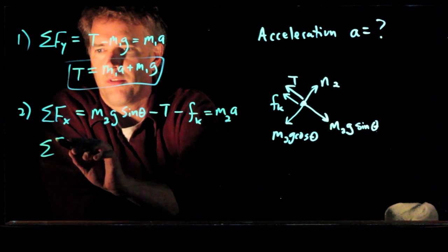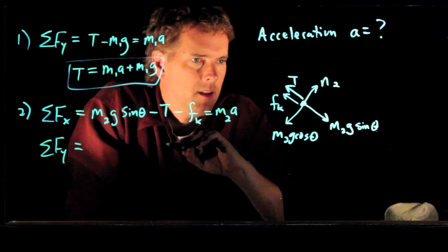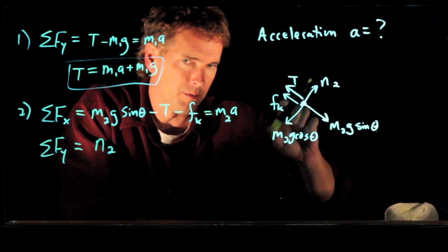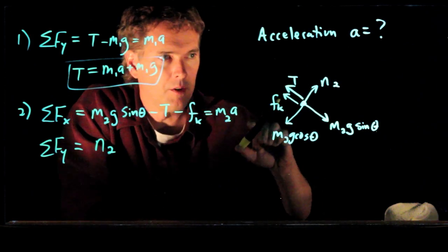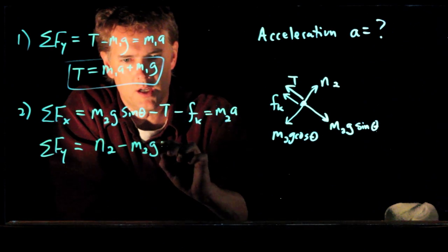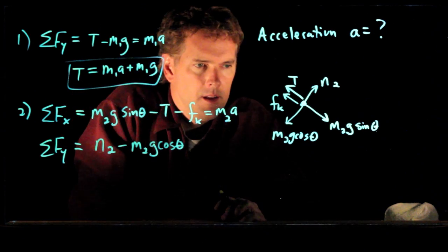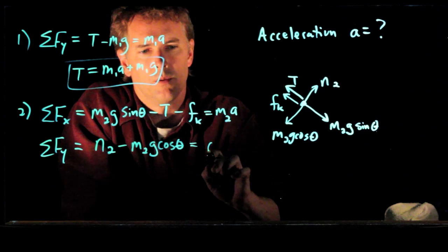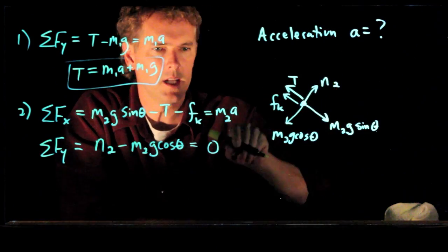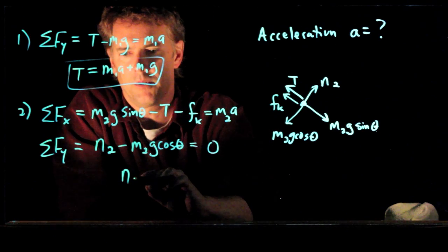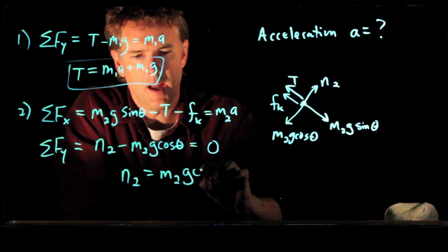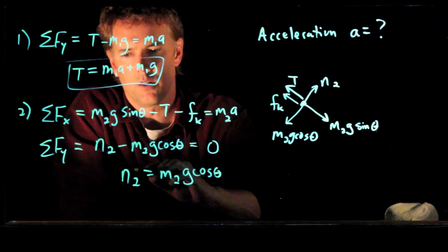What about the sum of the forces in the y direction for that box? We've got N2 in the positive y — remember we are in the rotated coordinate system — so N2 minus m2g cosine theta equals zero, because it's staying on the incline; it's not jumping up off the incline or falling through the incline. So now we immediately know what the normal force is on that box: it's m2g cosine theta.